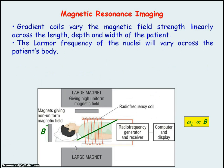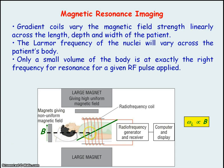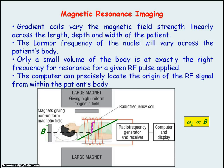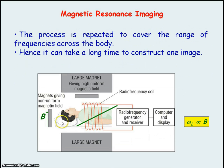The gradient coils vary the magnetic field strength across the patient's body, which means the Larmor frequency of the nuclei also varies linearly across the body. Only a small volume of the body will be at exactly the right frequency for resonance to occur for a given RF pulse. Only those nuclei whose frequency matches the applied RF pulse will absorb it, be excited, then relax back emitting a detectable RF signal — allowing the exact location of the signal's origin to be known. This process must be repeated to cover the full range of frequencies across the body.